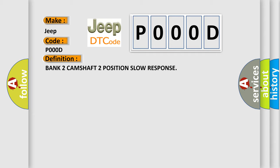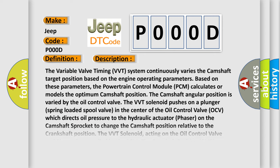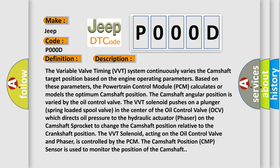The variable valve timing (VVT) system continuously varies the camshaft target position based on the engine operating parameters. The powertrain control module (PCM) calculates or models the optimum camshaft position. The camshaft angular position is varied by the oil control valve. The VVT solenoid pushes on a plunger spring-loaded spool valve in the center of the oil control valve (OCV), which directs oil pressure to the hydraulic actuator phaser on the camshaft sprocket to change the camshaft position relative to the crankshaft. The VVT solenoid, acting on the oil control valve and phaser, is controlled by the PCM. The camshaft position (CMP) sensor is used to monitor the position of the camshaft.